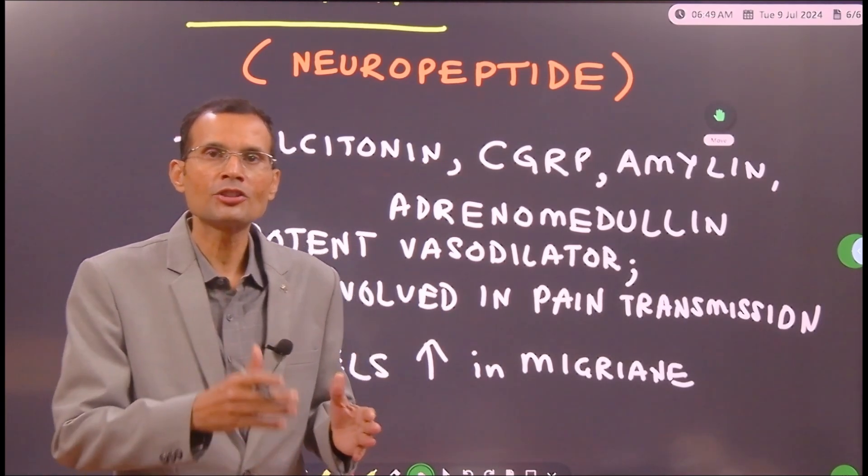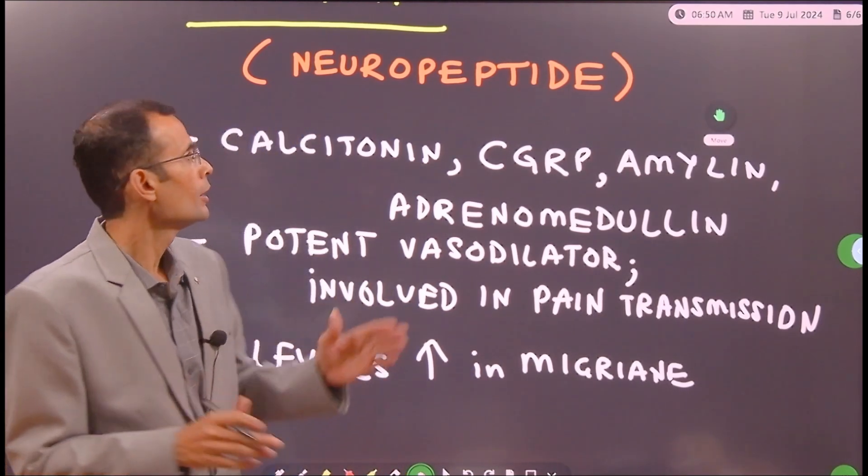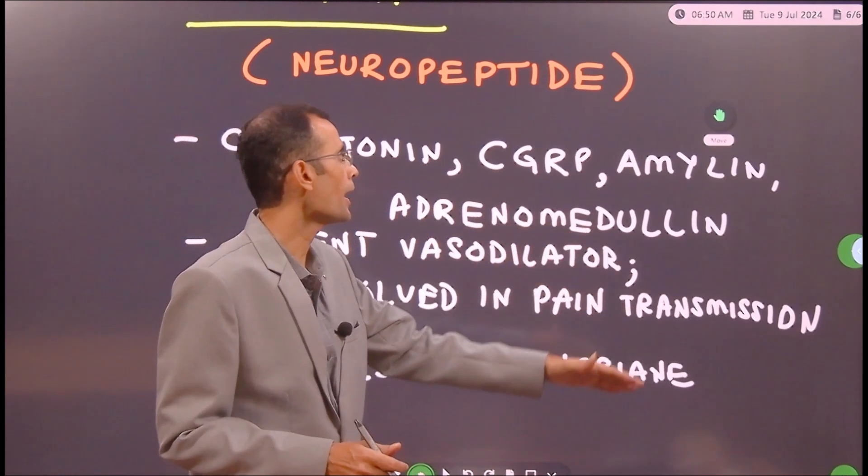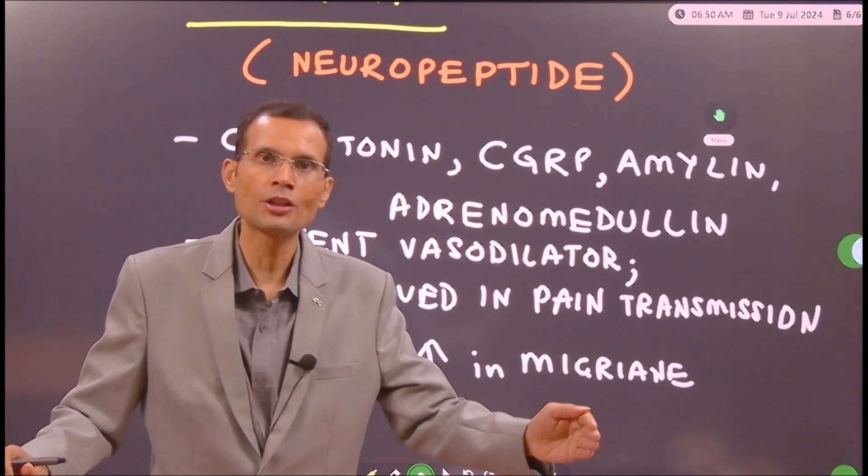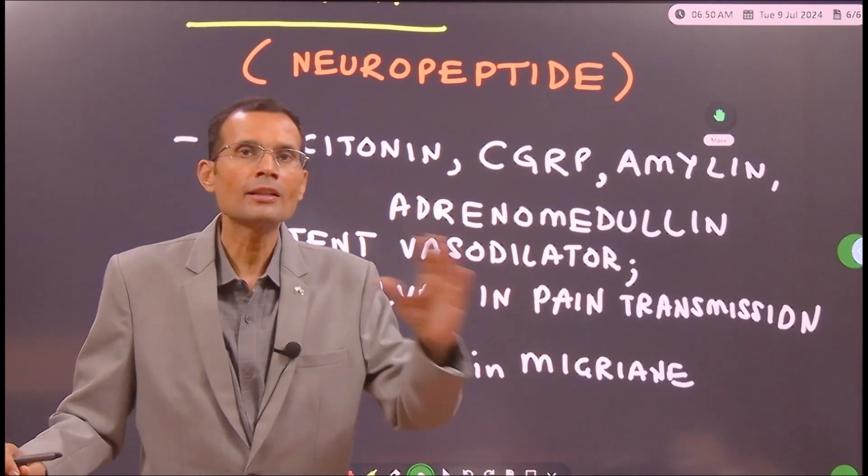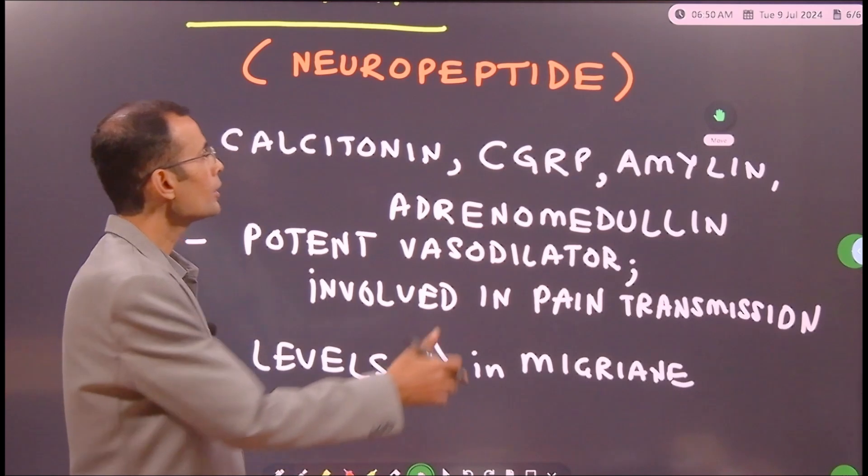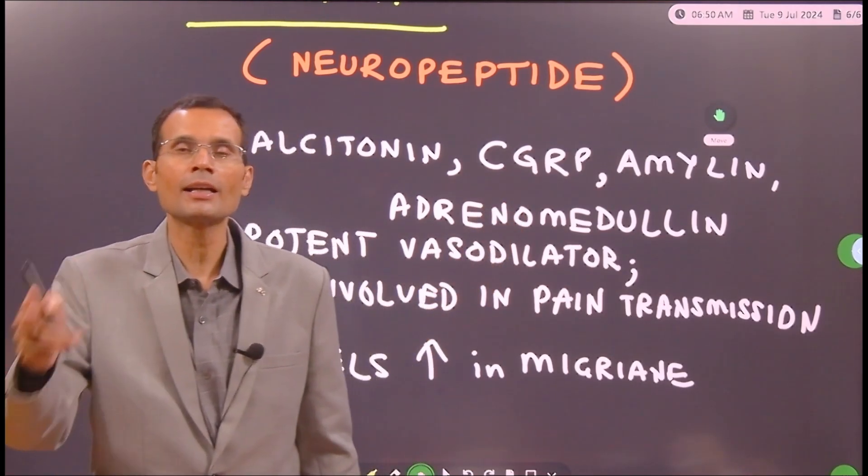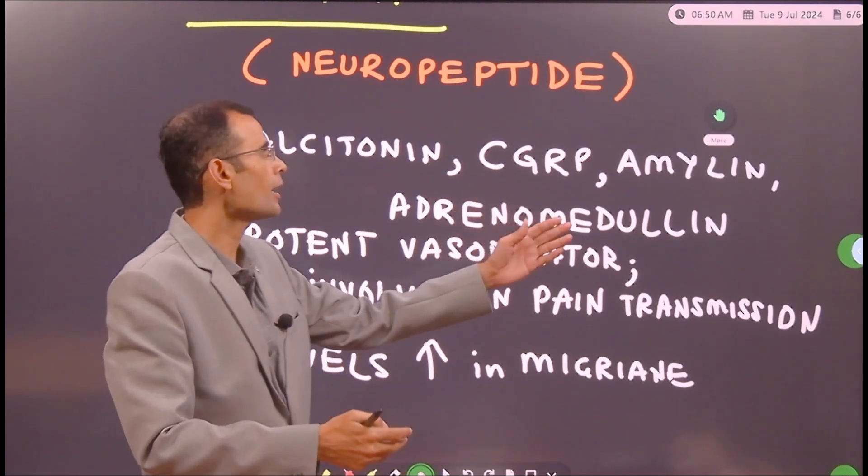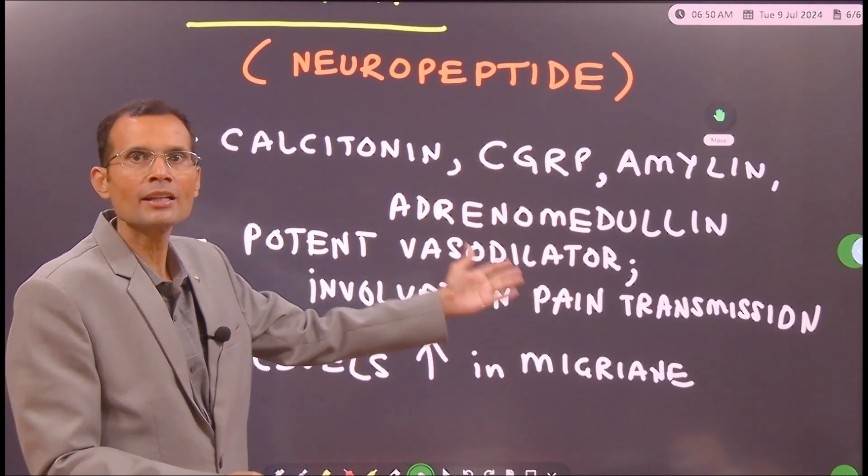Now, why is it called related peptide? Because there is a gene which is the gene for a particular family of ligands. Alternate splicing of that gene is going to form CGRP, amylin, adrenomedulin, all these. I mean, the gene that forms calcitonin, the same gene with alternate splicing will result in the formation of CGRP, calcitonin gene related peptide, and other ligands such as amylin and adrenomedulin.